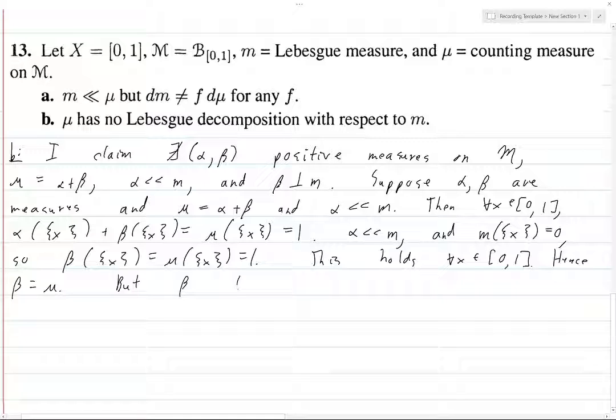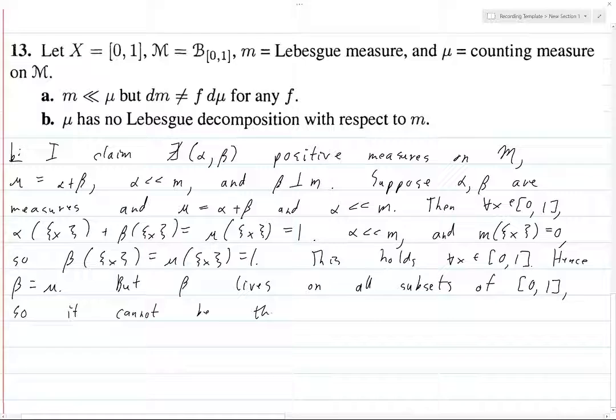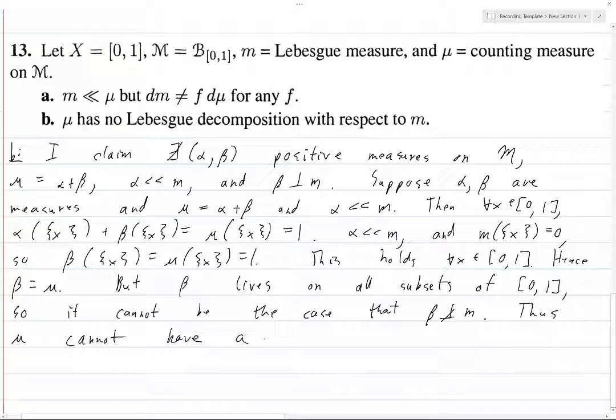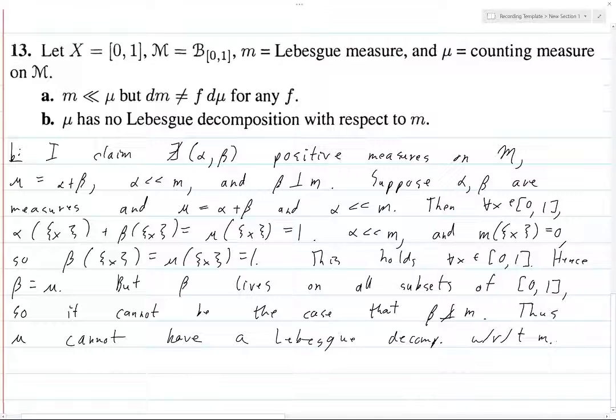But beta then lives on all subsets of [0,1], so it cannot be the case that beta is mutually singular with respect to m. Thus, mu cannot have a Lebesgue decomposition with respect to m. Because we know that if we satisfy some of the properties for it, then that guarantees that the last property won't hold.